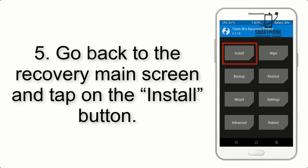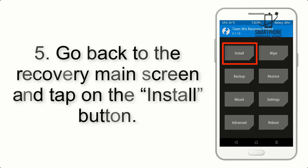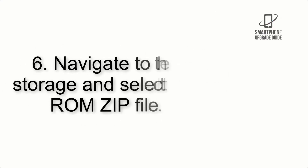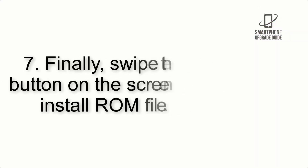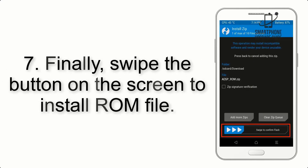Step 5: Go back to the recovery main screen and tap on the Install button. Step 6: Navigate to the storage and select the ROM zip file. Step 7: Finally, swipe the button on the screen to install the ROM file.